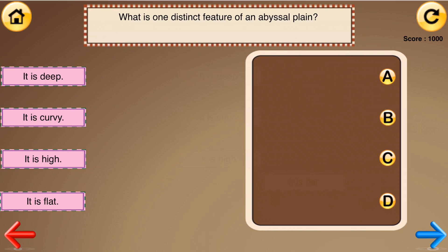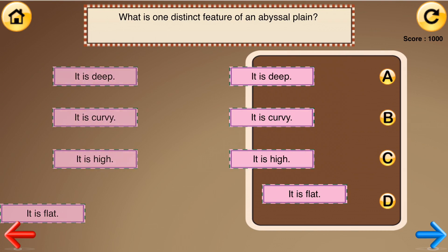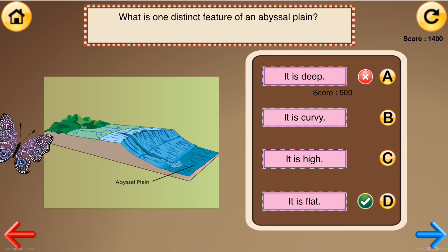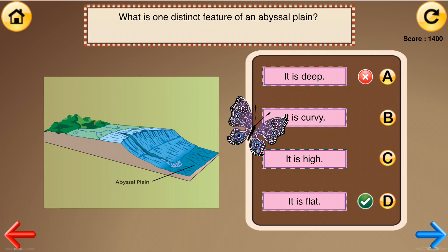What is one distinct feature of an abyssal plane? It is deep. It is curvy. It is high. It is flat. Correct answer: It is flat.